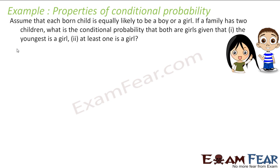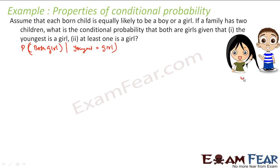For the first part, we find the probability of both girls given that the youngest equals girl. Let's say the youngest is one position and the oldest is another. The first baby can be girl or boy, and the second baby can also be girl or boy — giving us four combinations: girl-girl, girl-boy, boy-girl, boy-boy.